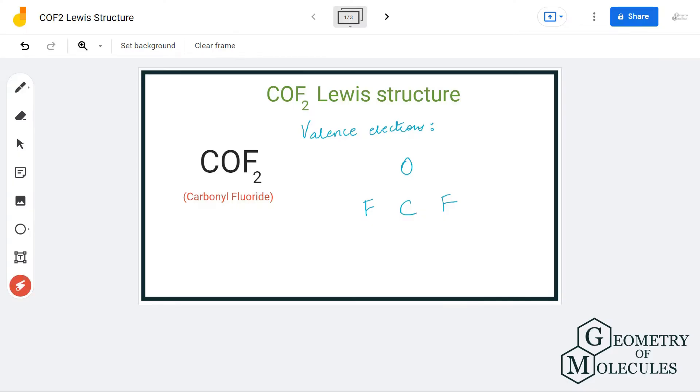Hi guys, welcome back to our channel. In today's video, we are going to help you with COF2 Lewis structure. It consists of one carbon atom, one oxygen atom, and two fluorine atoms. To find out the Lewis structure, we will first need to know the total number of valence electrons.